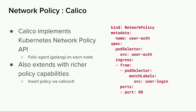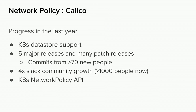To implement that, Calico runs an agent on each host — again written in Go — which we call Felix, carrying with the cat theme. It's worth noting that Calico does support a richer set of policy capabilities than the Kubernetes API exposes, and those can be used via the calicoctl tool. What's changed with the Calico project in the last year? Similar to Flannel, the major change is Kubernetes datastore support, making it much easier to deploy on Kubernetes. There have been five major releases of Calico and lots of patch releases, with commits from more than 70 new contributors in the last year. The Slack community for Calico has seen a quadrupling and there are now over a thousand people on there.